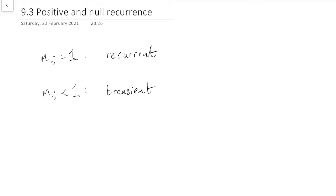So this is the distinction we had before, between recurrence and transients, where we looked at the return probability MI. If the return probability was 1, we were recurrent, and if the return probability MI was strictly less than 1, we were transient.